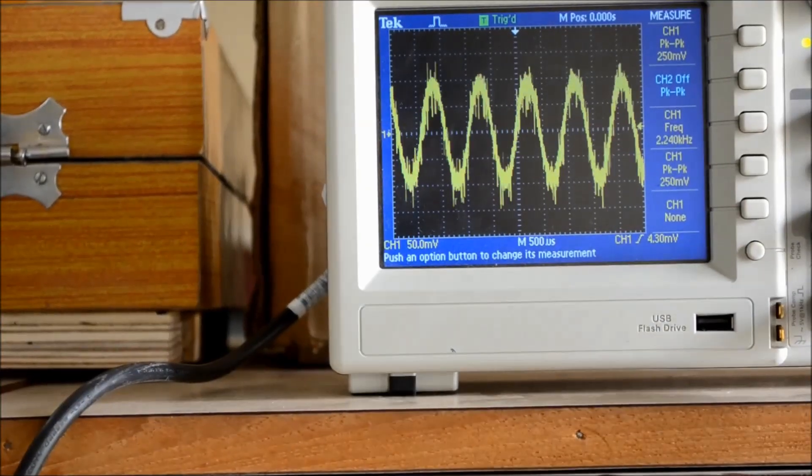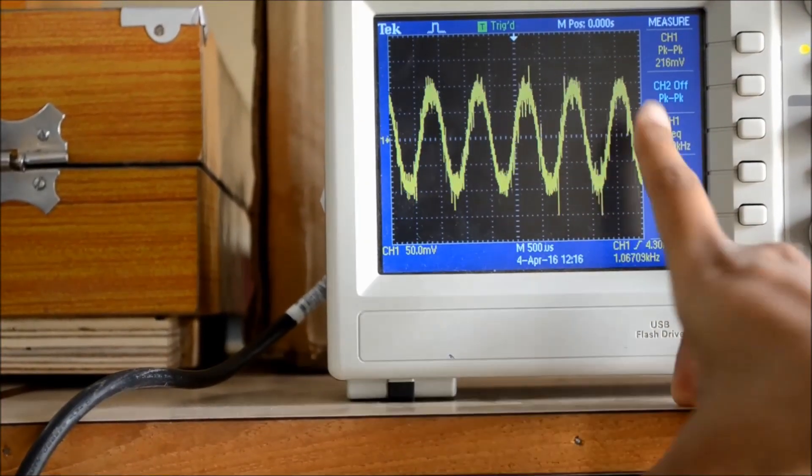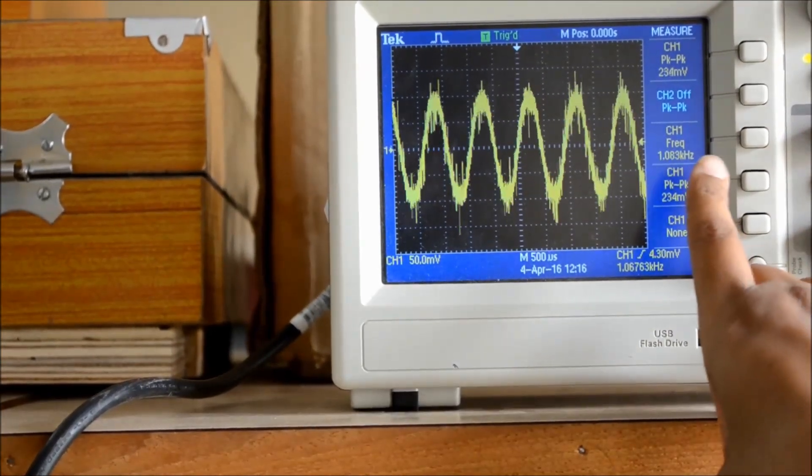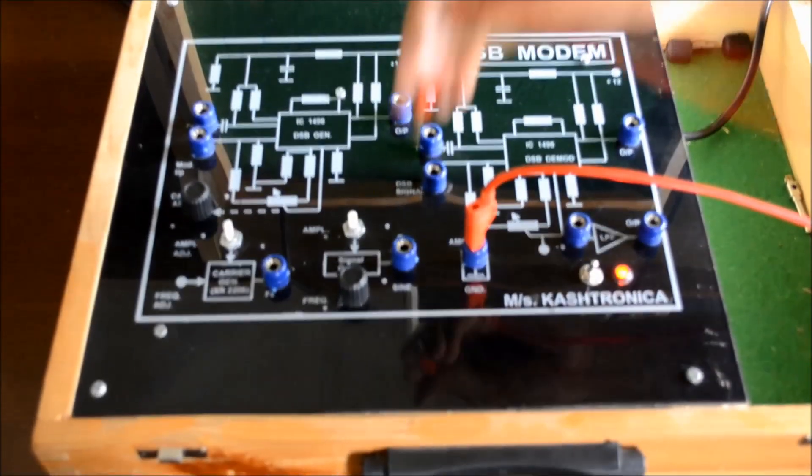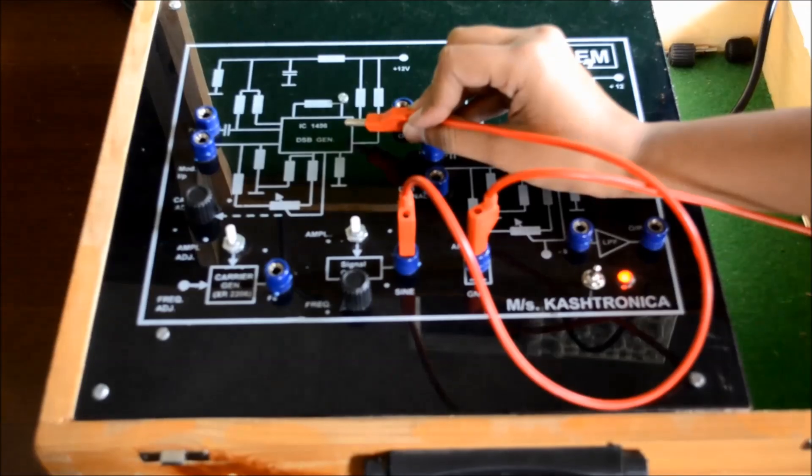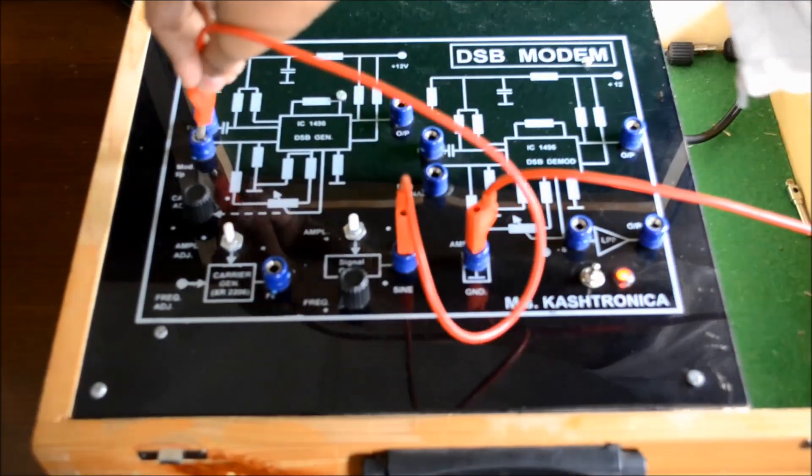By adjusting the amplitude of the modulating signal to 200mV, nearly about 200mV, and the frequency of the modulating signal is 1kHz. The output of the signal generator is given to the input of IC 1496, the modulating input of IC 1496.